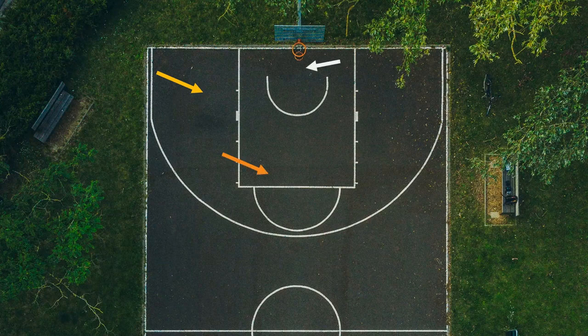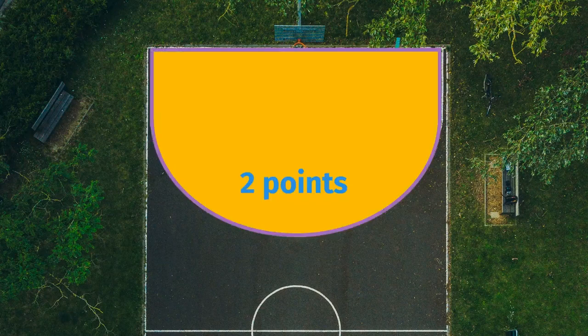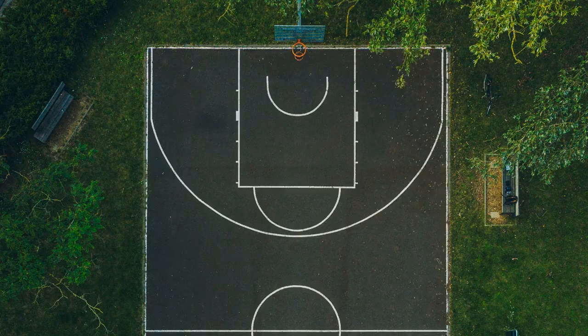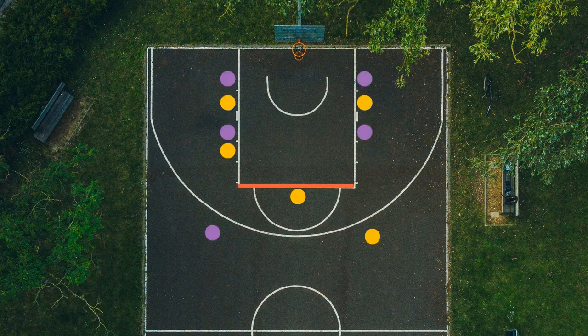If you shoot the ball from inside the three-point line, it's worth two points. Shoot it with both feet behind the three-point line and it's worth three points — just kidding about fourteen. If you get fouled, you get a free throw from behind the free throw line. The other players stand along the key and fight over the ball if you miss. Make a free throw basket and your team gets one point.